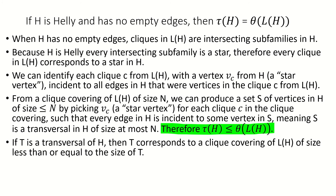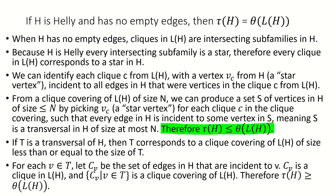If we have a transversal T, then for each vertex v in T, there exists a clique in the line graph C_v composed of the edges that are incident to v in the hypergraph. In other words, this clique in the line graph is just the set of edges in the hypergraph incident to v.